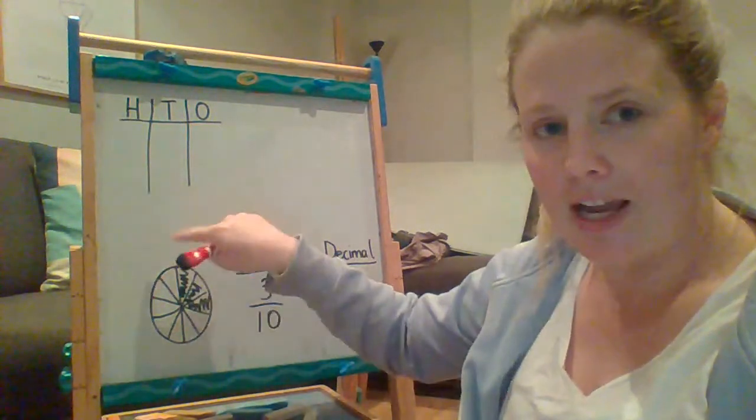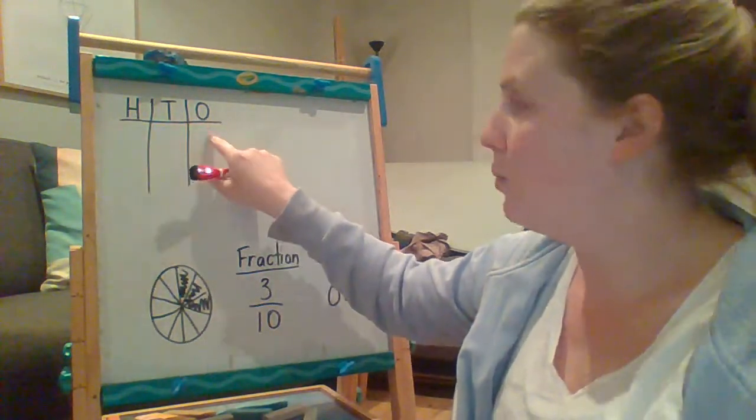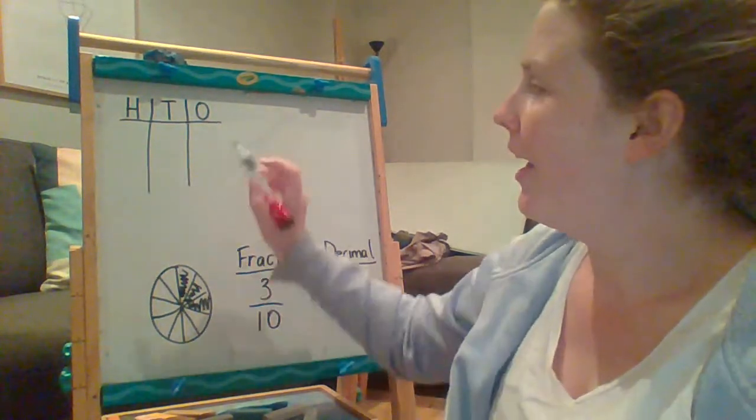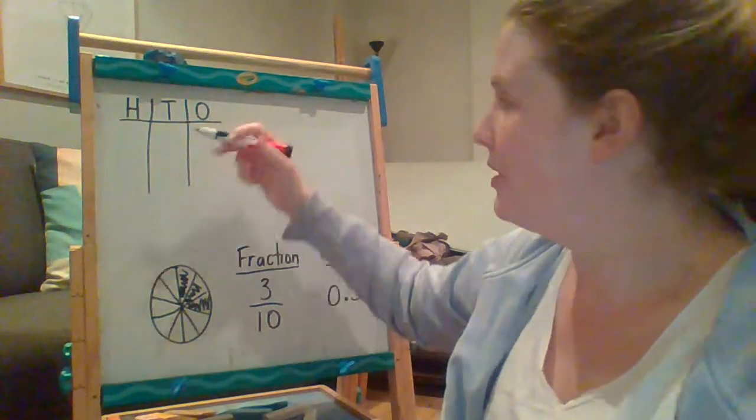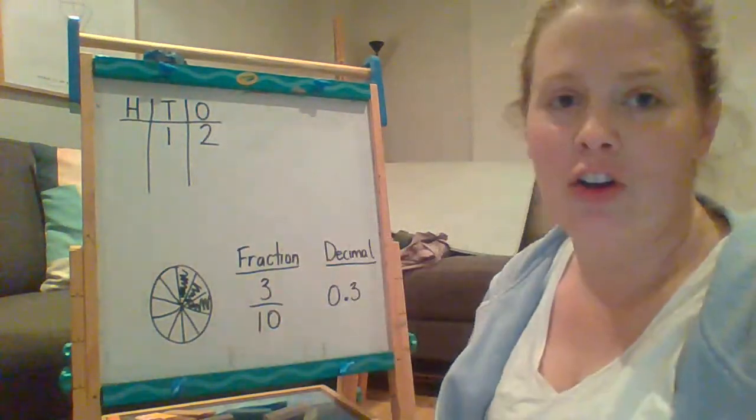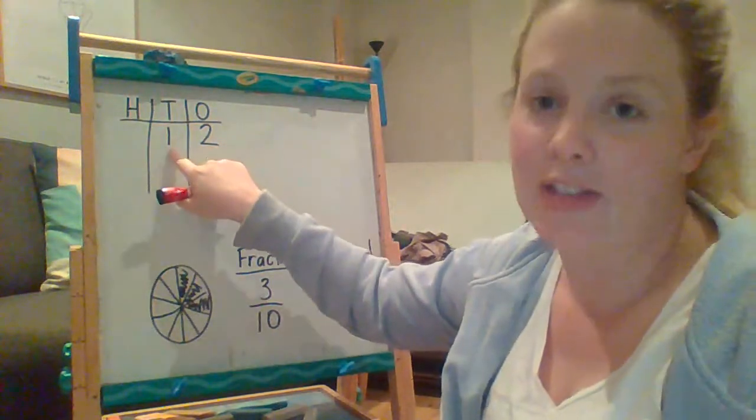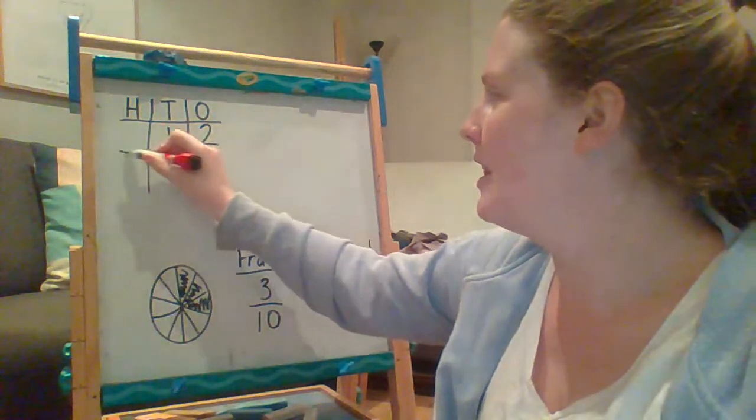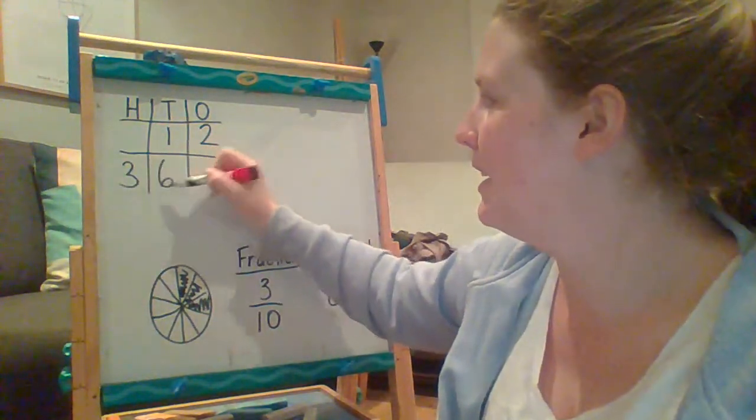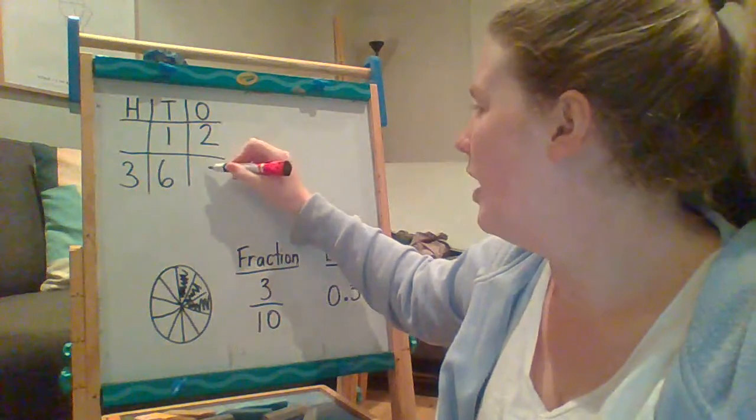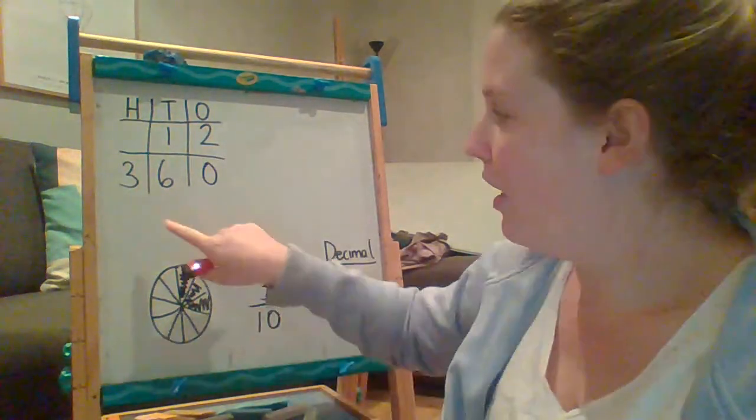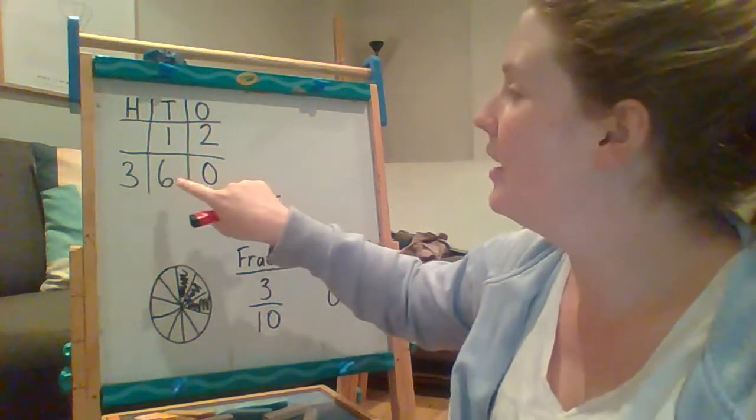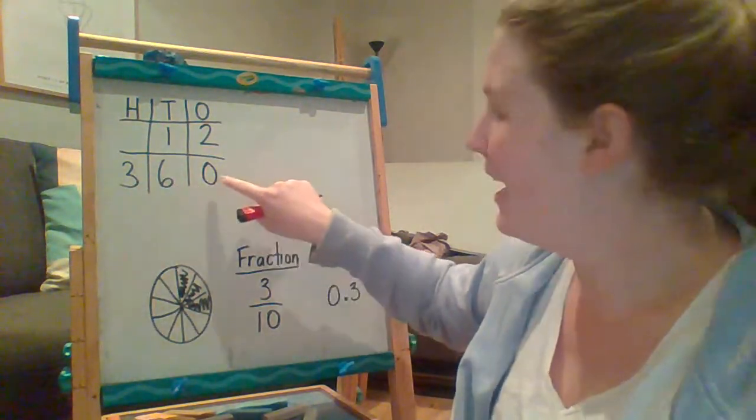So we're very familiar with our tables of hundreds, tens, and ones. Now if I was to put a one here and a two here, I know that number is 12 because I have one ten and two ones. If I had a three here, a six here, and a zero here, I know that that number is 360 because I have three hundreds, six tens, and zero ones.